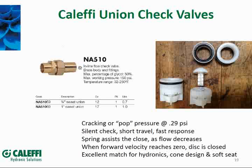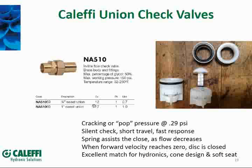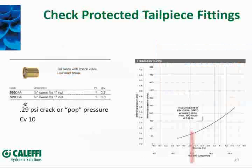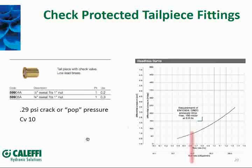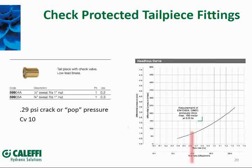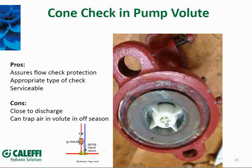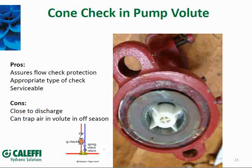What we did is make this available in a union configuration — solder it into the system first, then install the check valve so you don't melt it. You've got the ability to open it up for servicing. The flow rates are good: CV of 12 and 17 in the two different pipe sizes, all brass construction. This is the type of valve I'd encourage you to use — a soft-seated, cone-shaped check valve with spring assist. It's also built into many different devices; many pumps come with the check valve built in, and you can remove it if an application doesn't need it.